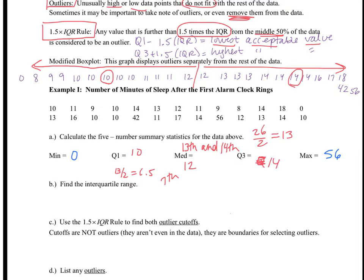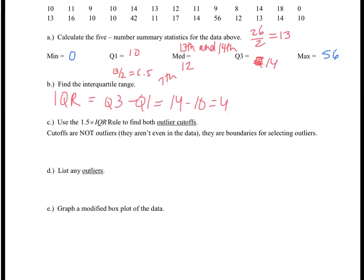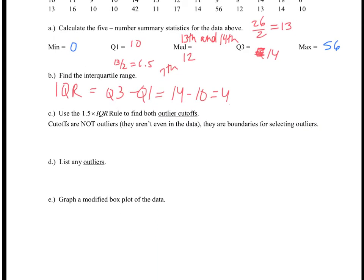Okay, now when I go to find the interquartile range, I'm going to do Q3 minus Q1, so 14 minus 10, which gives me 4. Now, my 1.5 times IQR cutoffs, what I'm going to do here is I'm going to do 1.5 times 4, which gives me 6.